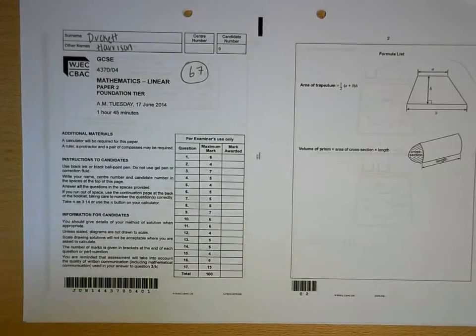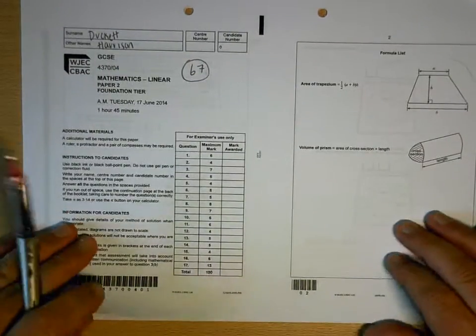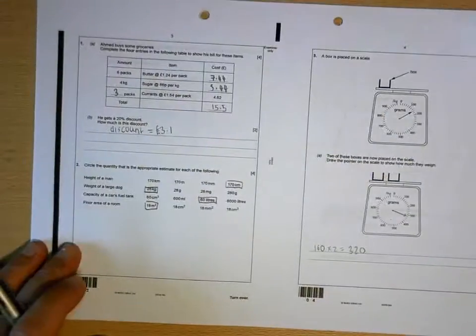Right then Harrison, so your best mark so far has been 62, but in paper 2, the best you've scored is 20. So I'm going to be absolutely delighted if I see anything approaching 67 here. Let's see.